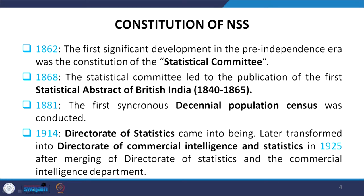The Statistical Abstract covered the period 1840 to 1865. In 1881, the first synchronous decennial population census was conducted — the word 'synchronous' matters, as it means a systematic record of population comparable with other decennial censuses. Since then, every 10 years, the Indian government has conducted the population census; the latest was in 2011. In 1914, the Directorate of Statistics came into being, which was later transferred into the Directorate of Commercial Intelligence and Statistics in 1925 after merging with the Commercial Intelligence Department.